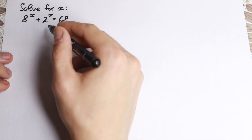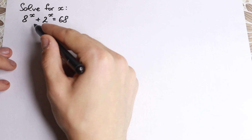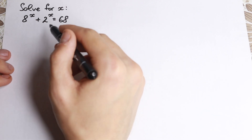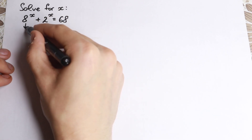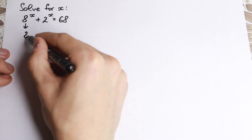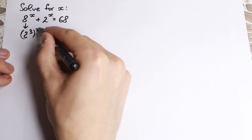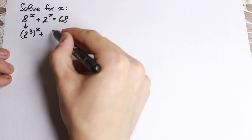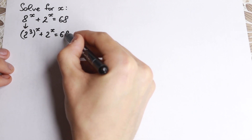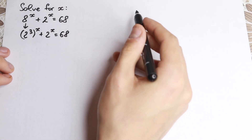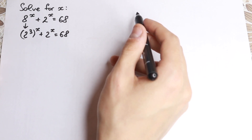How can we solve it? First of all, I see this 2 and this 8. These are really great even numbers, and moreover this 8 is really great because we can write it as 2 cubed, all raised to the power x, plus 2 to the x equal to 68. So this is our first step — we write this 8 as 2 cubed.